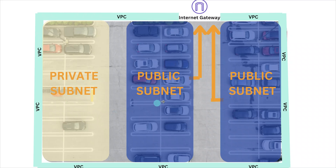The section which does not have a way to go in and out of the VPC will be called a private subnet. You will deploy resources like web app servers — ones which need to interact with the outside world — inside public subnets, and resources that need an additional layer of security, like your databases, inside the private subnet. I hope this analogy helped you understand what VPC, subnets, and internet gateway are.